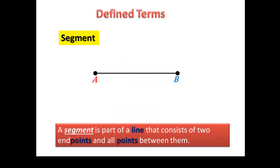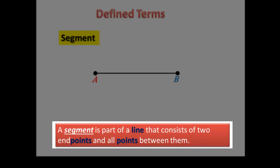Now that we've given our undefined terms a general description, let's start creating our defined terms. We're going to start with a segment, a ray, and opposite rays. A segment is part of a line that consists of two endpoints and all the points that are between them.